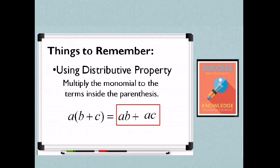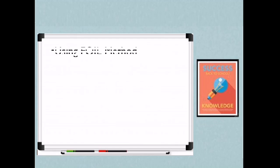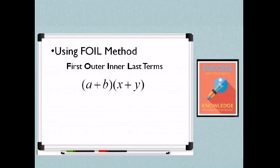That is using distributive property. The other one is using FOIL method. FOIL means first, outer, inner, and last terms. This is applicable when we multiply binomial to a binomial. Again, we will be using the FOIL method. Example, A plus B times the quantity X plus Y.